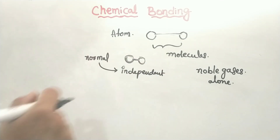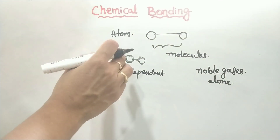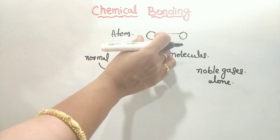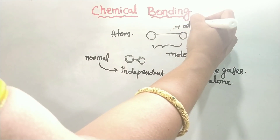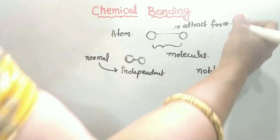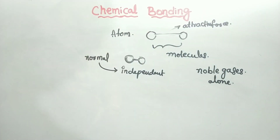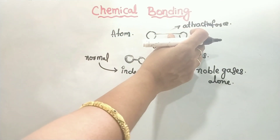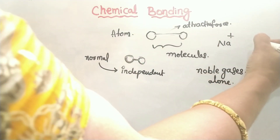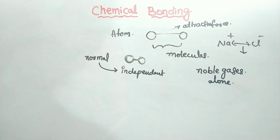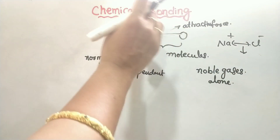So the definition of chemical bonding is: the attractive forces which hold any two constituent atoms or ions together is called a chemical bond. For example, Na+ and Cl−. The attractive force holds these atoms and ions together in a chemical bond.